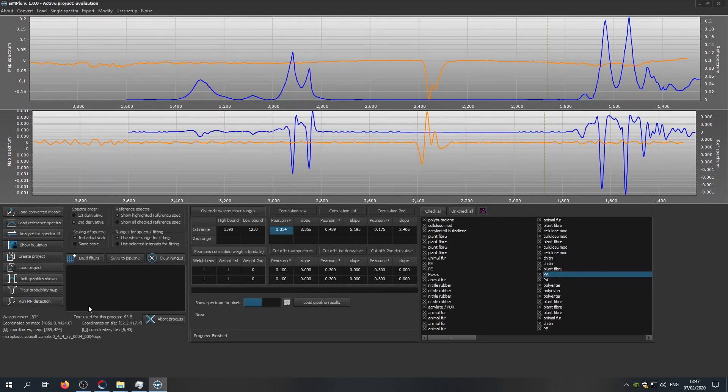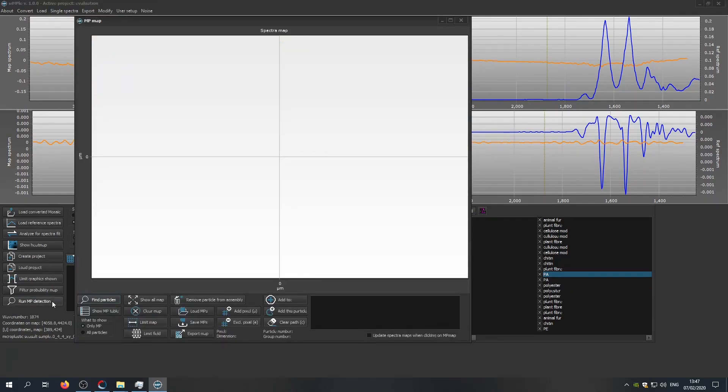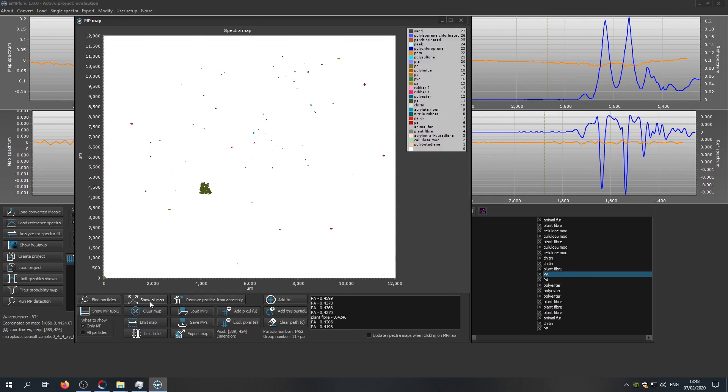To get to the results of the analysis, we click on run MP detection, find particles, and it will now, based on the correlation map, calculate the particle map. When the calculation is done, we can click on show all map and we will be given a spatial distribution and a color coding of the particles on the filter area.